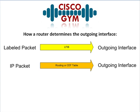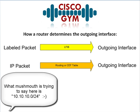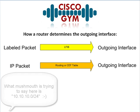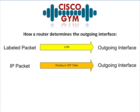Now if you receive a packet that is untagged or unlabeled, it's not going to go to the LFIB because there's no label. So what it's going to do is a normal routing lookup — it's going to look at the routing table, or the CEF table. Since enabling CEF is a prerequisite of running MPLS, it's actually going to go to the CEF table. So it gets an IP packet, say for 10.10.10.0/24, and it says how do I route this — goes to the CEF table and says go ahead and send that out Ethernet 0. So there are actually two different methods for determining the outgoing interface, based on whether you're dealing with a labeled packet or an unlabeled IP packet.